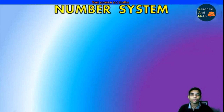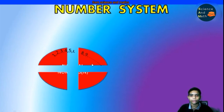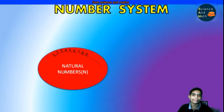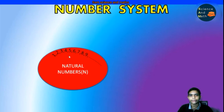You all know the basic concepts about the number system. The first one is natural numbers. It is denoted by the letter N, and as you all know, it starts from 1 and ends at infinity.